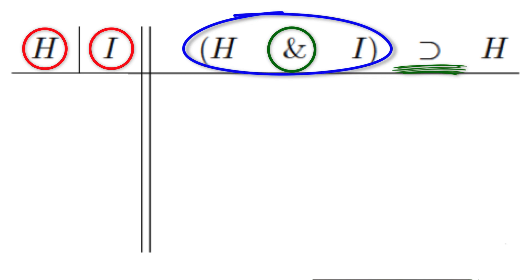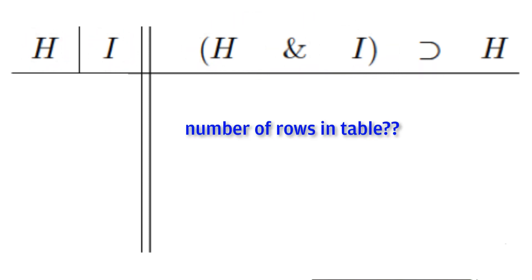But before we get started filling in the table itself, how many rows will our truth table need? The rule for computing how many rows we need in any given truth table is actually quite simple. It's just base two, which is the number of possible truth values, true and false, that we're using, exponentiated by the number of atomic sentences, that is,